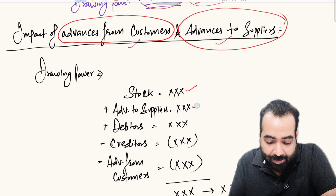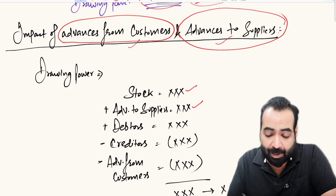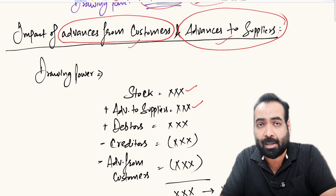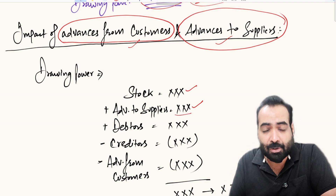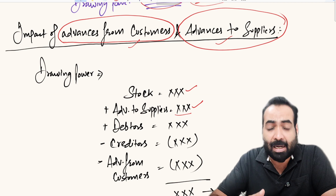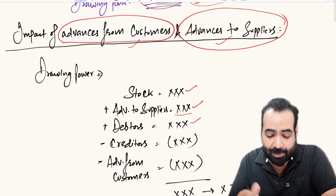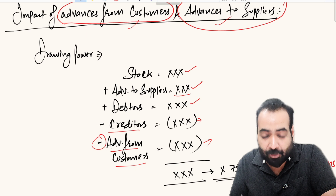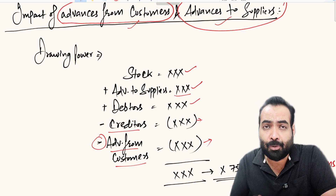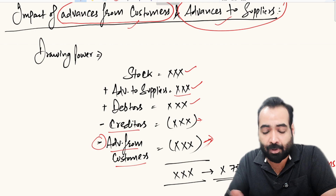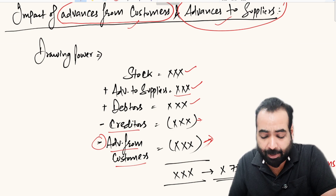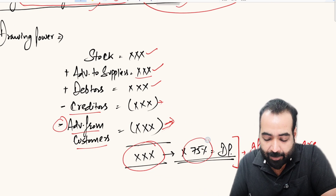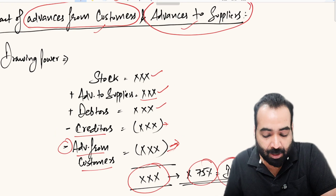Stock is allowed up to 180 days. Advances to suppliers represent money invested with suppliers while they prepare and dispatch your material — this is essentially stock in transit or stock in progress kept at the supplier's premises. Debtors are allowed up to the cycle permitted. Creditors are taken at full amount. Advances from customers are also a form of support, so that amount is deducted. You then take 75 percent of the result as your drawing power.